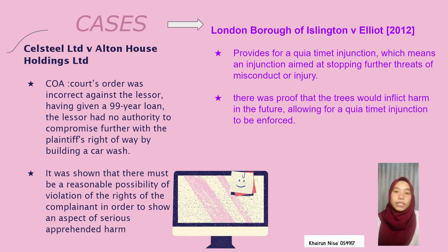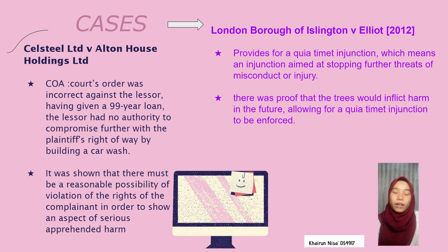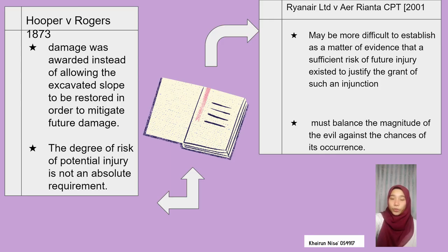In Self Steel Limited v Elton House Holding Limited, the court of appeal made an order against the lessor. Having given a 99-year lease, the lessor had no authority to compromise the plaintiff's rights of way by building a car wash. It was shown that there must be a reasonable possibility of violation of the complainant's rights in order to establish serious apprehended harm. In Hooper v Rogers, damages were awarded instead of allowing an excavated slope to be restored, in order to mitigate future damage. There is a difference in opinion as to the degree of risk of harm needed for a court to issue a quia timet injunction.